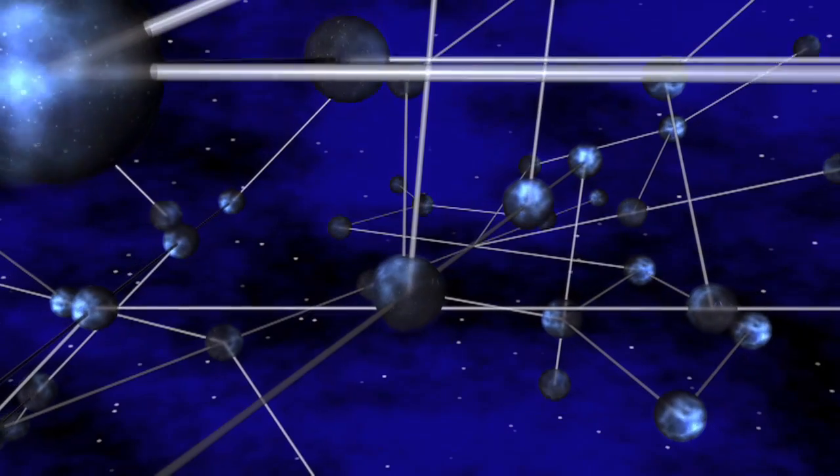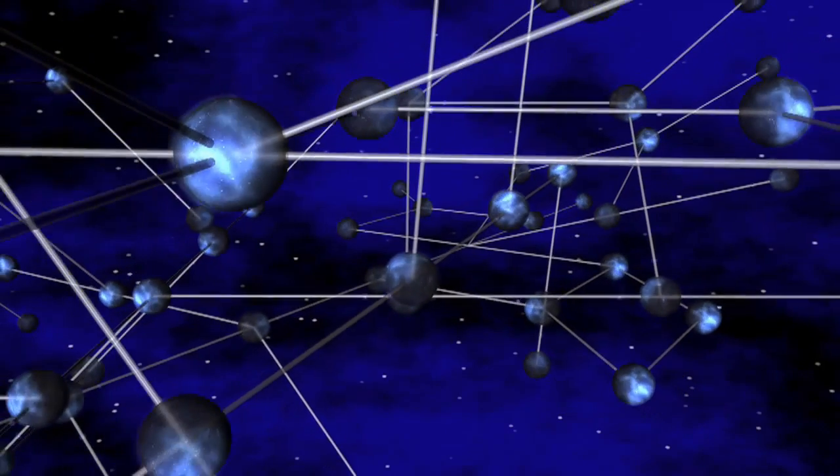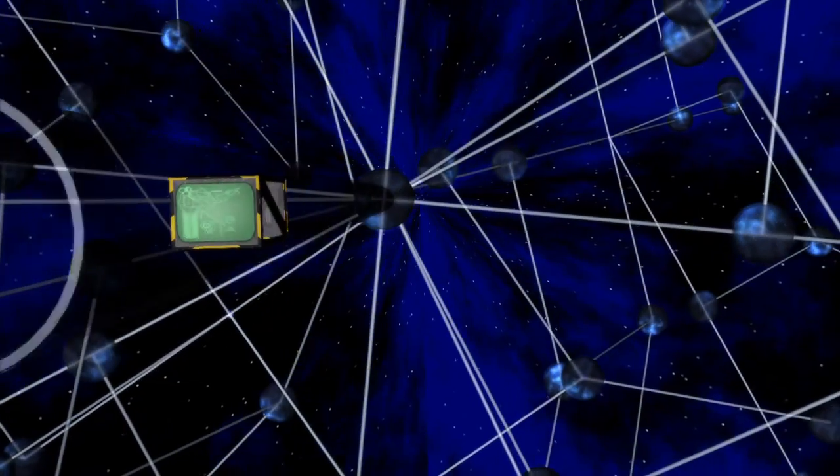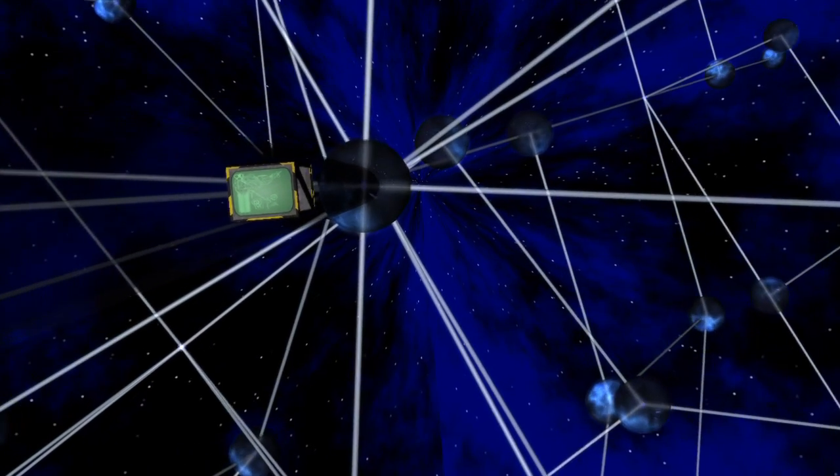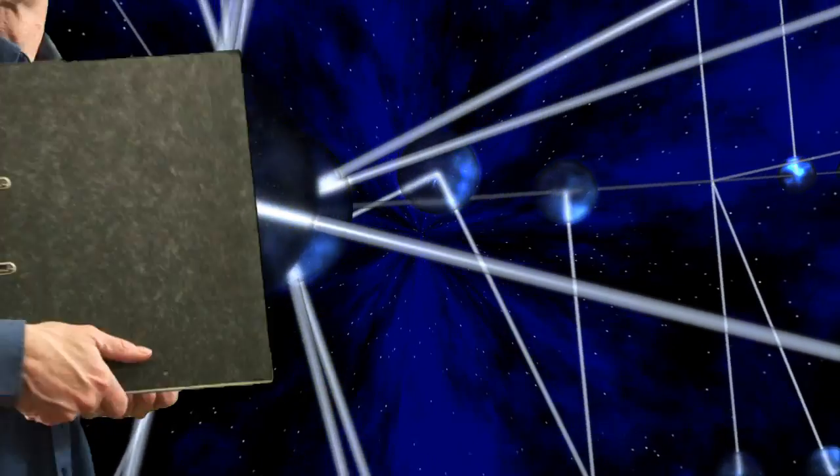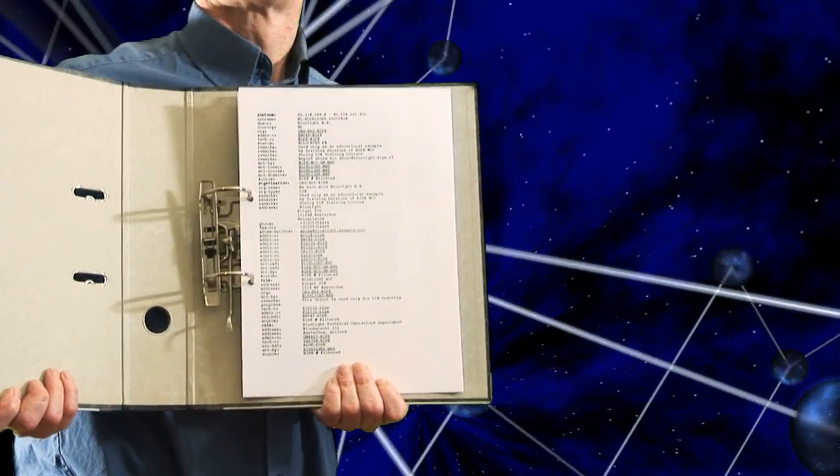How do networks communicate with each other on the Internet? Internet service providers and other organizations request a block of IP addresses, also known as a prefix, from a regional Internet registry.